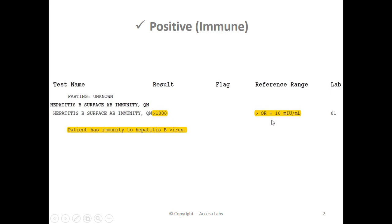Based on Quest Diagnostics Result Index shown here, any result greater than or equal to 10 milli-international units per milliliter is positive, which means that a person with this result has immunity to the hepatitis B virus. Therefore, this sample report represents a positive result, or immune result.